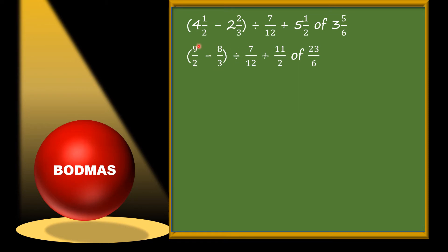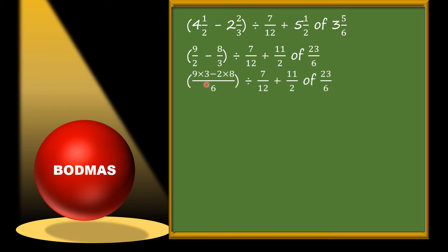Now we will concentrate on the small bracket. Here there is subtraction. Whenever we subtract fractions with different denominators, we need to take LCM. The LCM of 2 and 3 is 6. So we will get 6 as the new denominator. The rest of the things will be as they are.